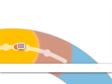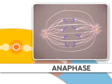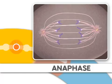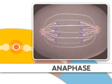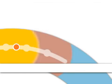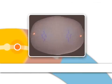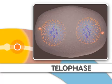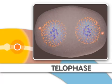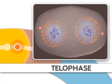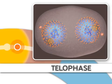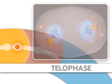Metaphase is followed by anaphase, where the chromosomes separate. Finally, during telophase, nuclear membranes reappear around the two sets of chromosomes. Mitosis is now complete.